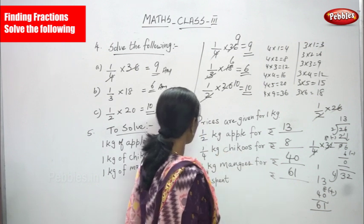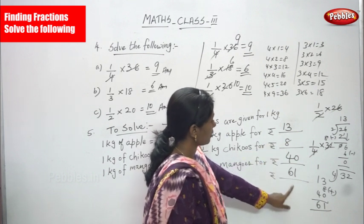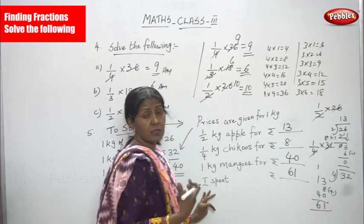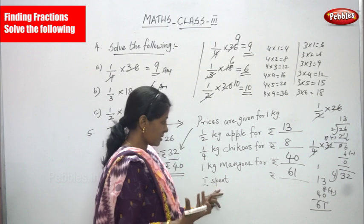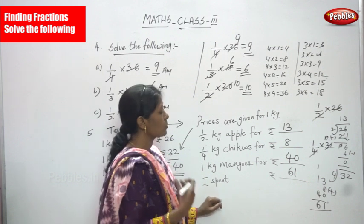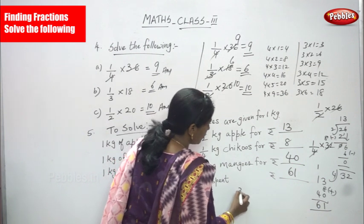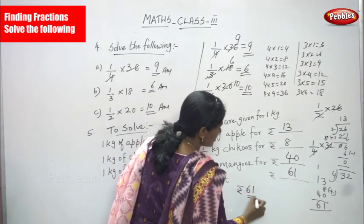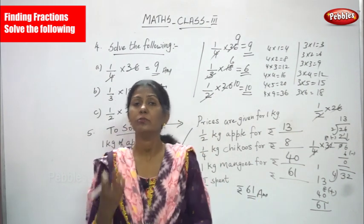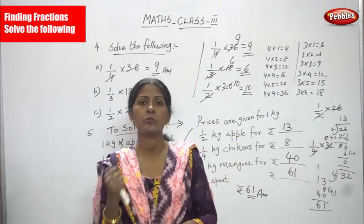So half kg and quarter kg were calculated, then added with 40. Total amount spent for the fruits is rupees 61. I think you understand how to do word problems with fractions and all the concepts in fractions. Go through the videos once or twice to understand the concept clearly.